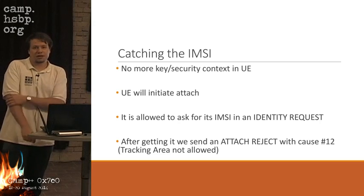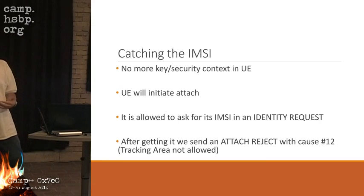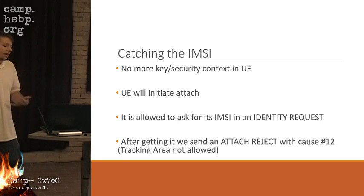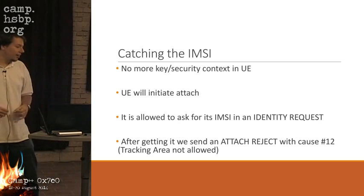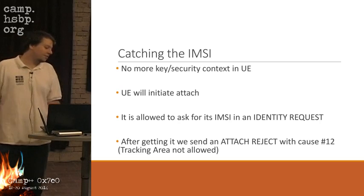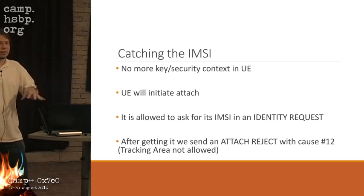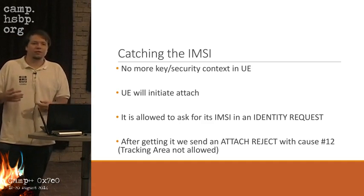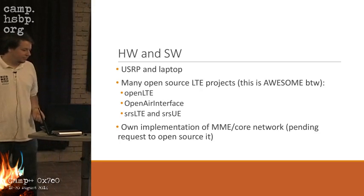Now we have a phone that accepts messages without integrity protection — no more key or security context in the UE. We initiate an attach, and during an attach it's allowed to ask for an IMSI, because you need it to gather the keys from the database. We ask for the IMSI, the phone hands it over, and then we simply reject the attach procedure with 'tracking area not allowed' — the LTE equivalent of GSM's 'location area not allowed.' The phone goes back to the original network.